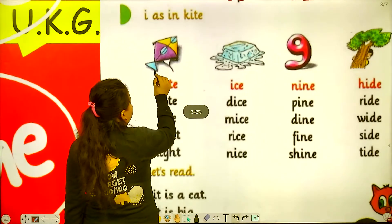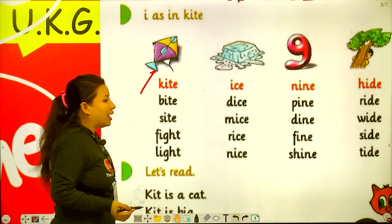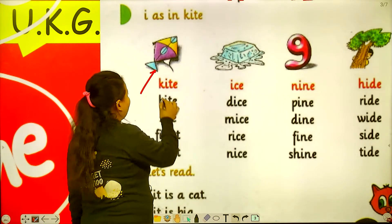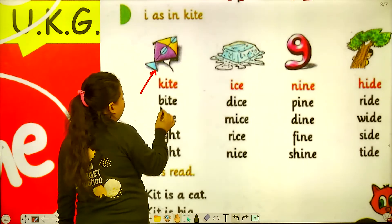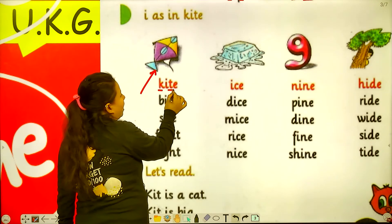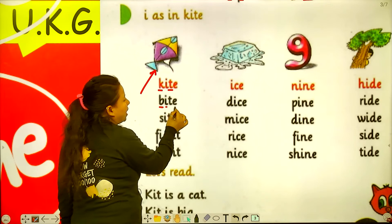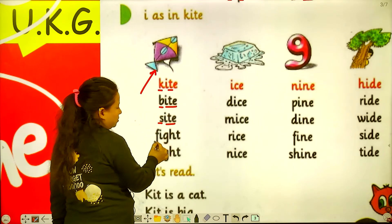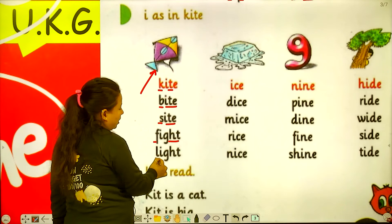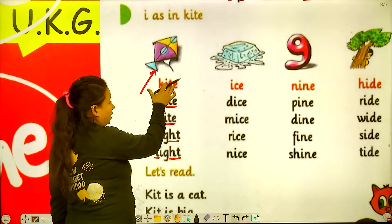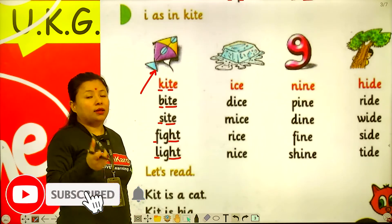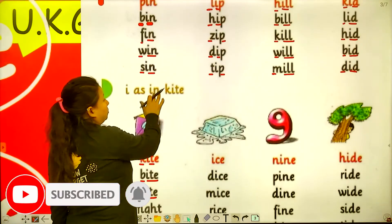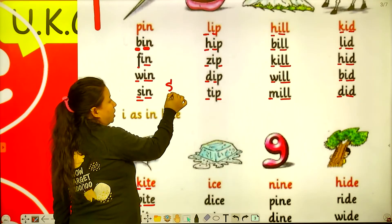Which picture is this? This is kite. But here the sound of I has been changed. Kite, bite, sight, fight, and light. In these words, which sound is coming? I sound. And in the words above, which sound was coming? E sound.